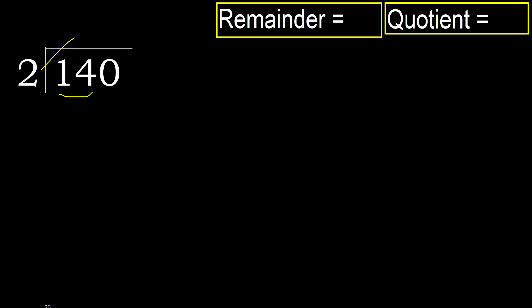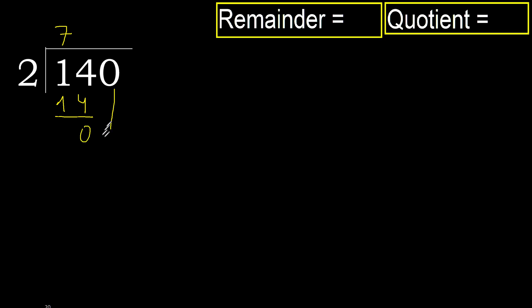but not greater. 2 multiplied by 8 is 16 — 16 is greater. 2 multiplied by 7 is 14, which is not greater. Subtract 0, next.